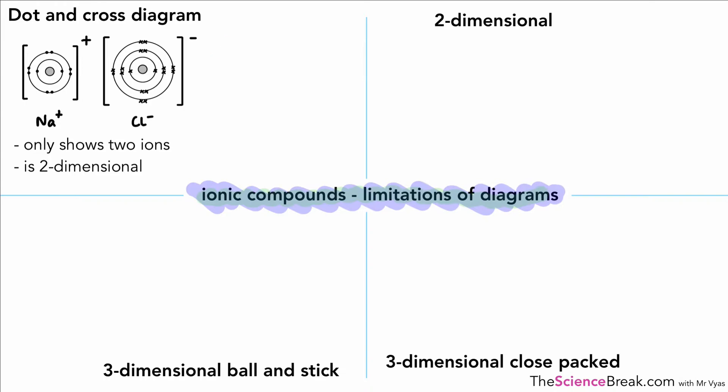The first one we have is our dot and cross diagram. We've done that previously in another video. The good thing about dot and cross diagrams is that they really show us how the electrons behave when an ionic bond is formed. It shows us where the electrons come from, where they go to, and how the ions are formed.